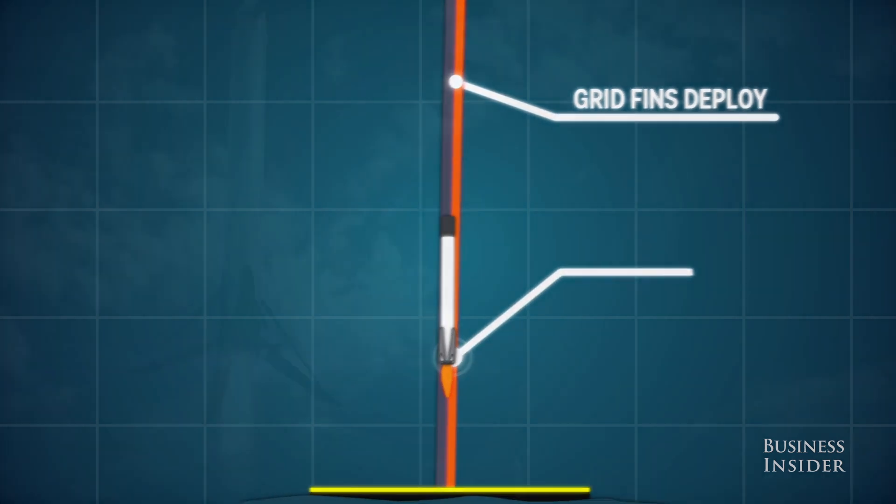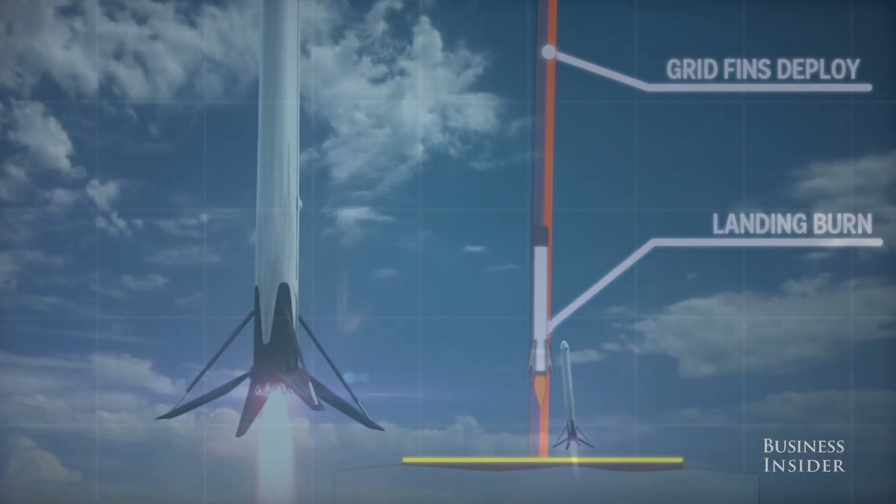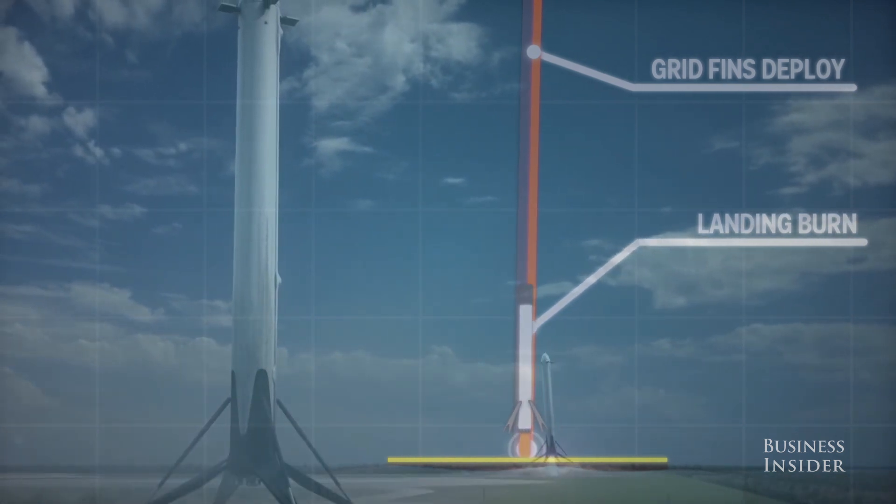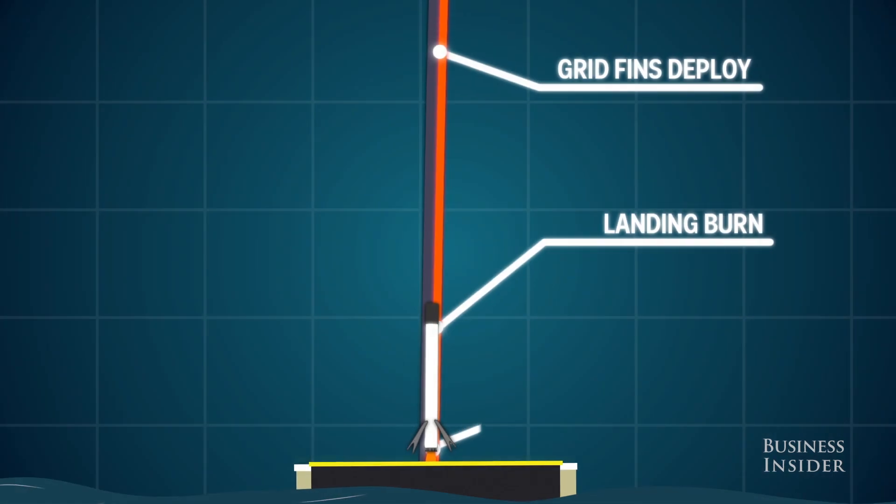Seconds before touchdown, the rocket fires its engines one last time to slow down even more. It deploys its landing gear, another first for rocket design, and gently lands on the platform.